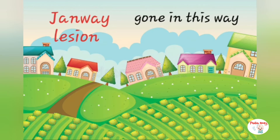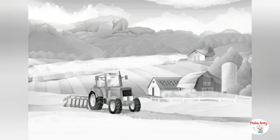The brokenhearted Duke then suddenly disappeared, and when people asked about him, some said he had just gone this way. This should remind us of Janeway lesions — another vascular phenomenon considered as a minor criteria of Duke criteria. These are blue-red macules over the palms and soles due to septic emboli.